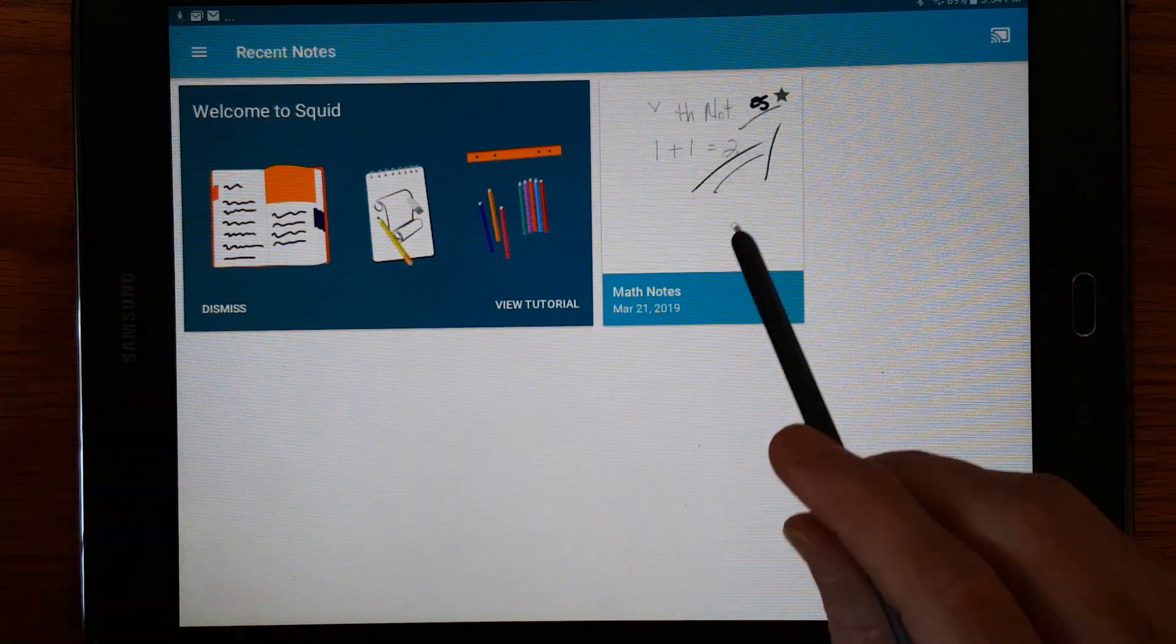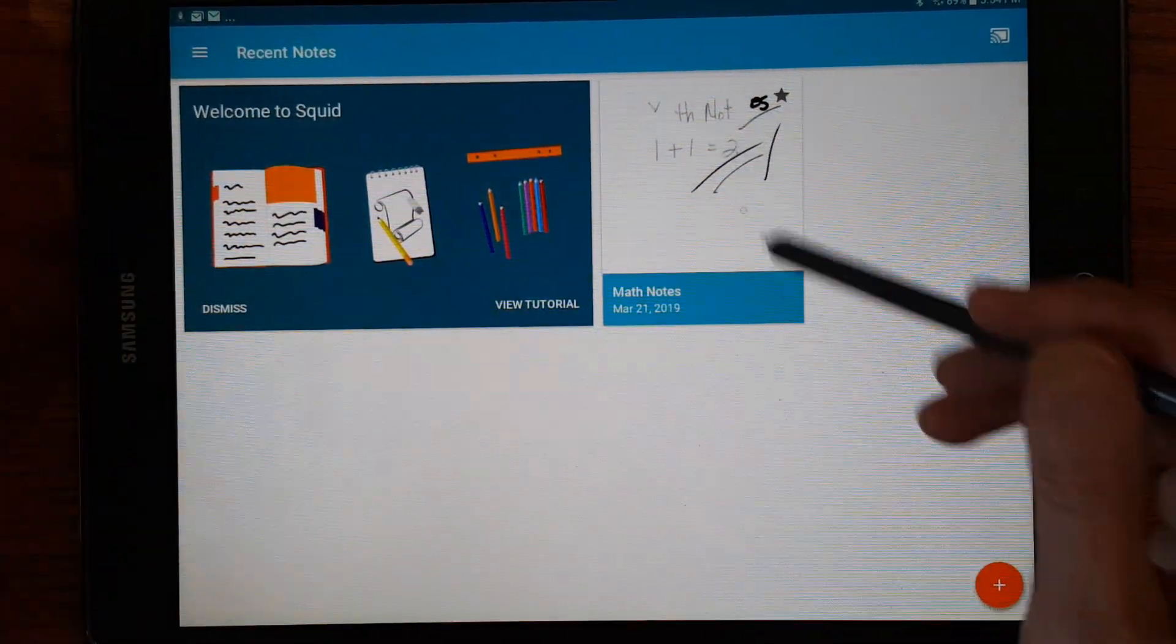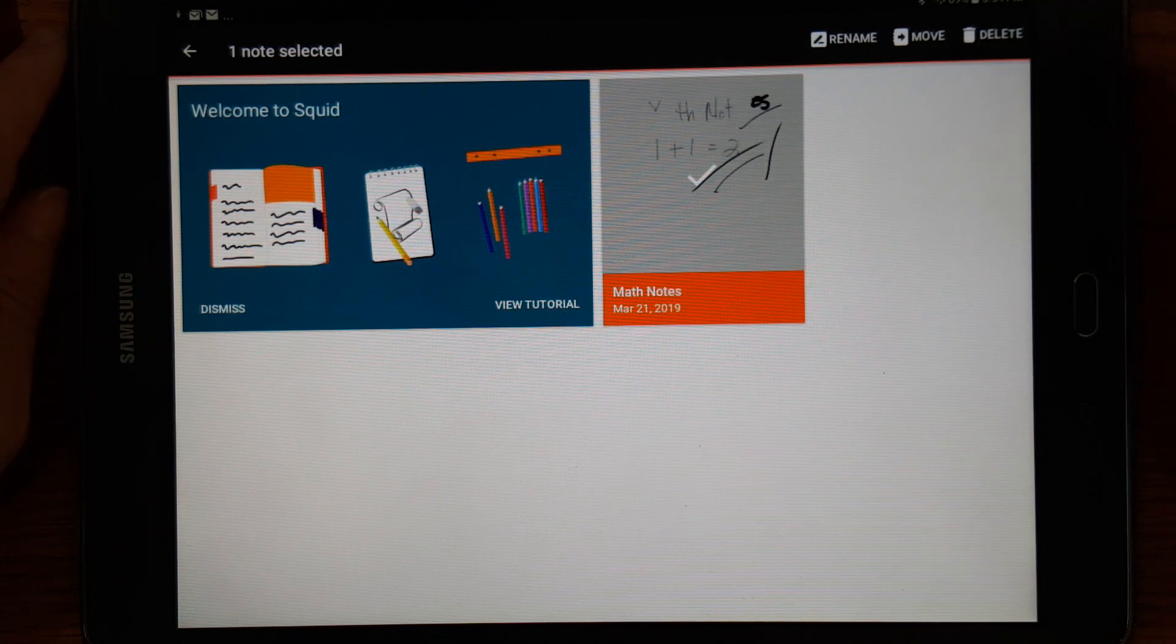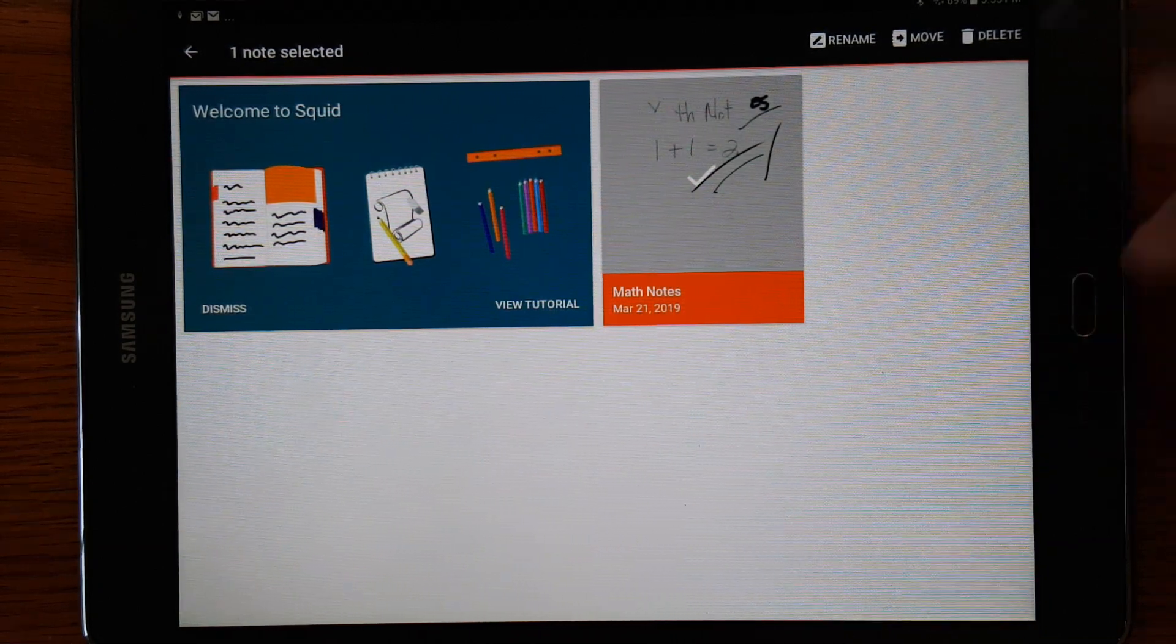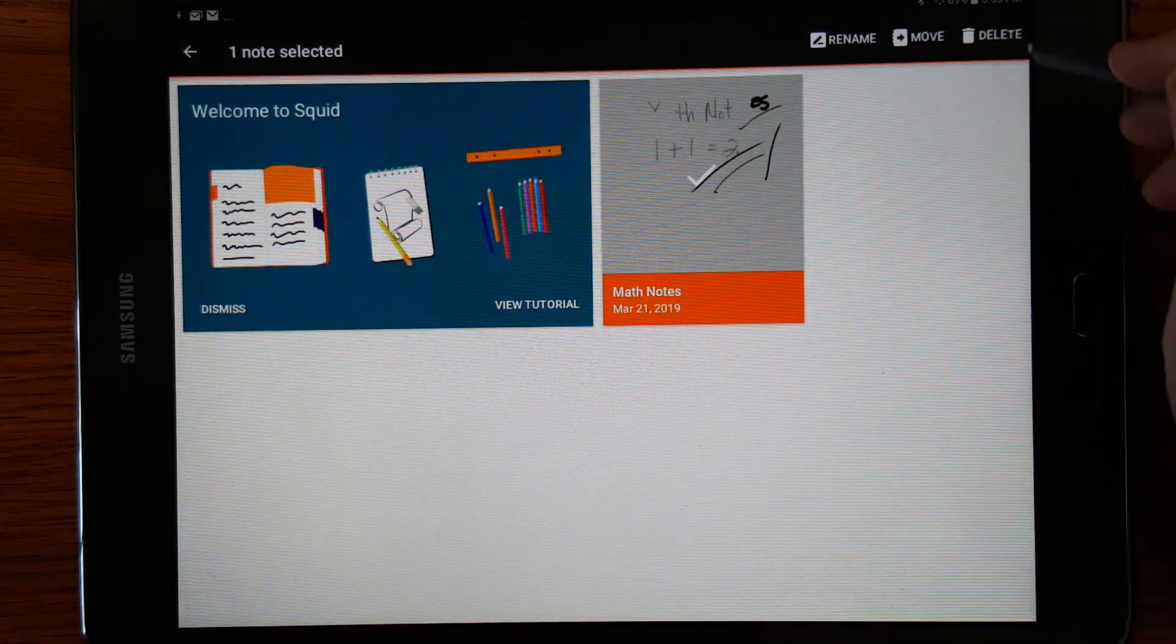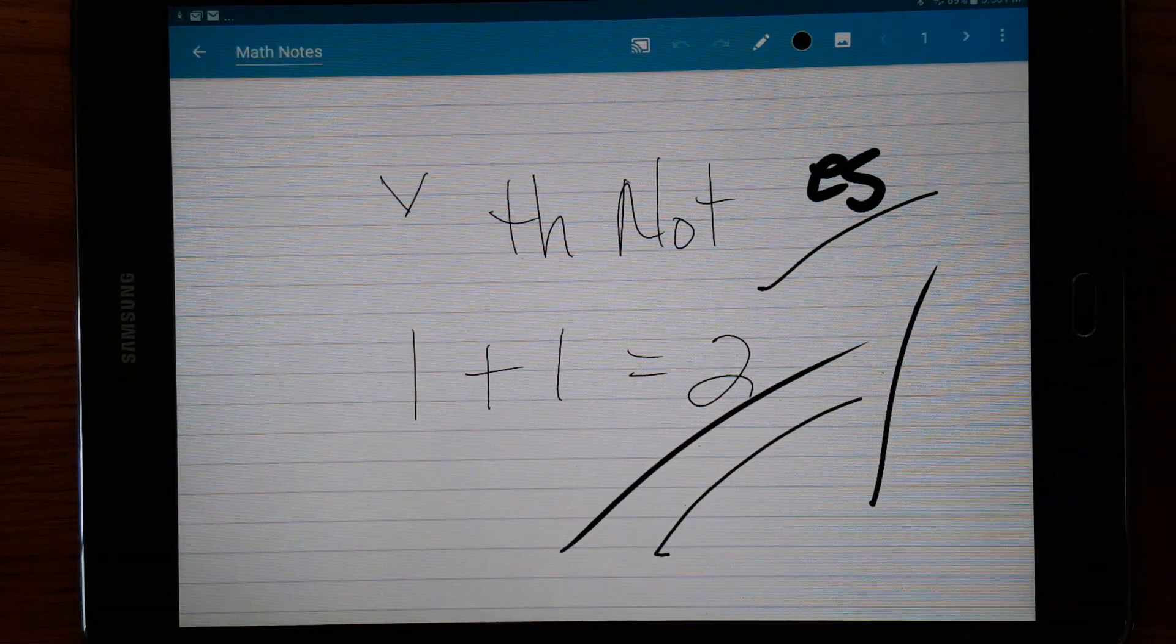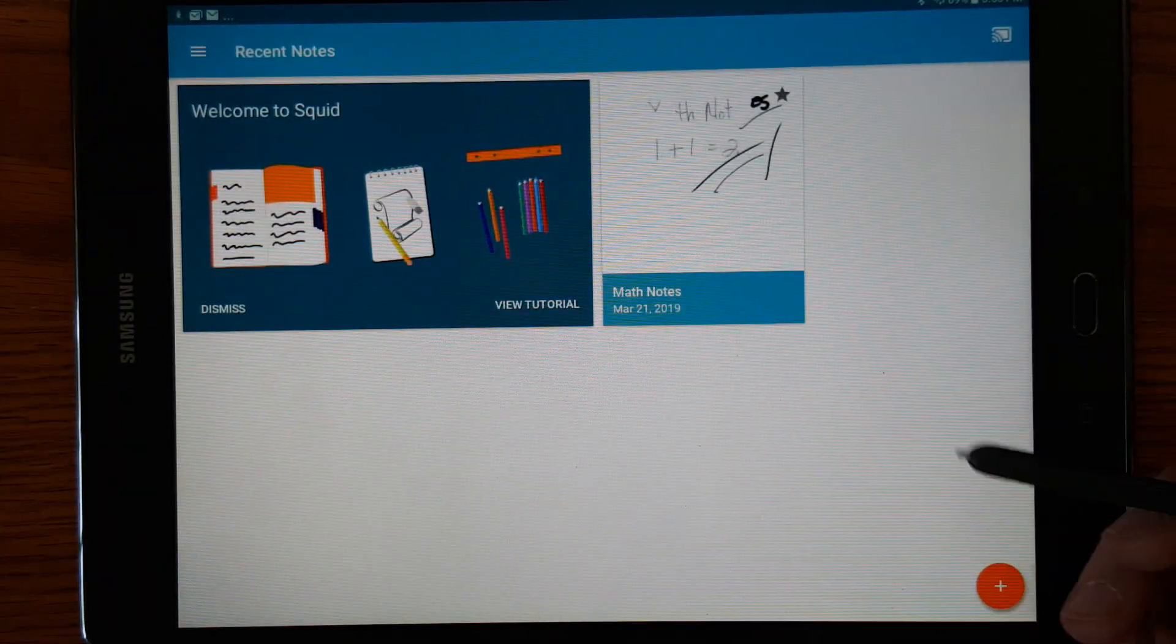Okay. And one downside, if you like having notebook covers, this, you just see the first page of the note. Let me see if there's a way to change that. You can rename it. You can move it. I bet it's probably something like you can move it to another file on your device. So this is similar to S-Note. Not exactly the same, but I do like that you can cast it up on the screen.